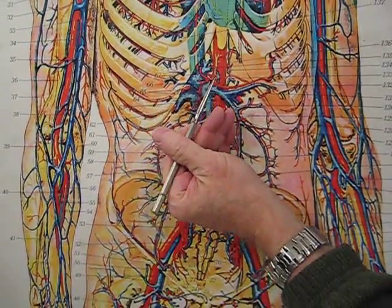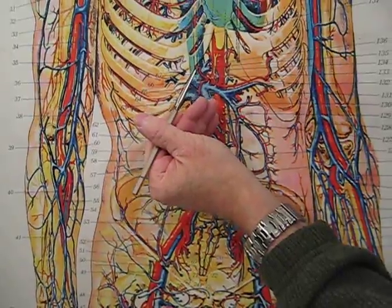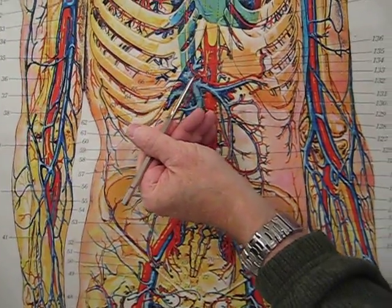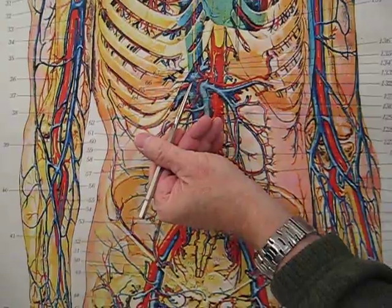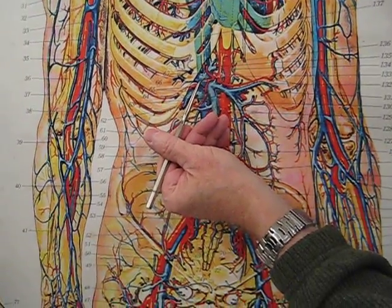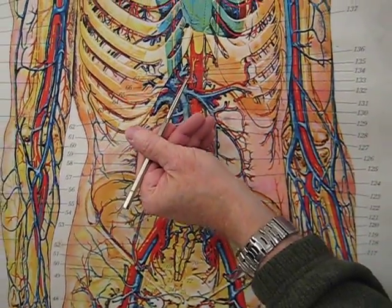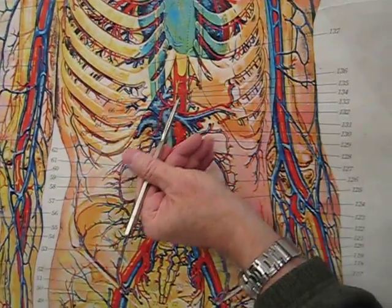Then we have our common hepatic artery, goes to the liver. But on the way to the liver it's going to give off the right gastric artery. Guess what that does? It comes into the lesser curvature of the stomach and anastomoses with the left gastric artery.